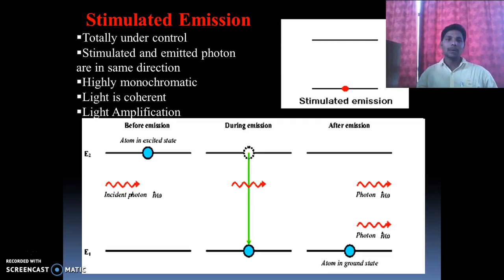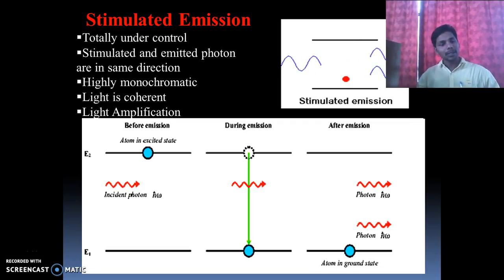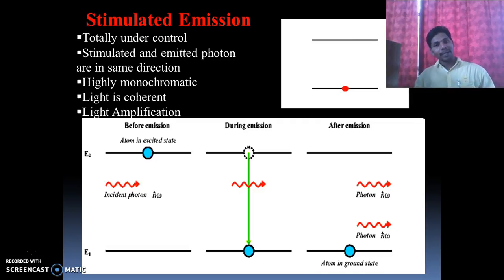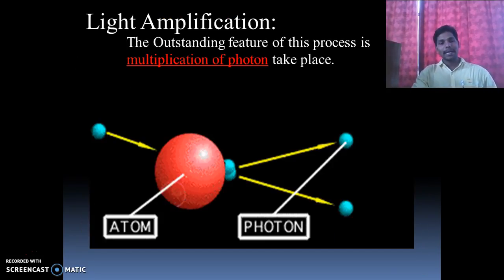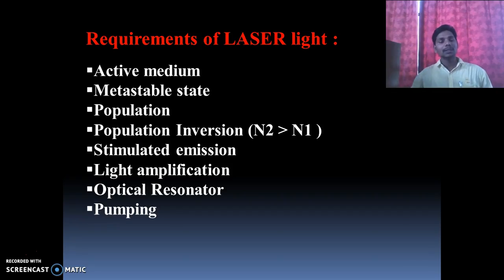To produce stimulated emission, we must have a metastable state. The metastable state is a state with a higher lifetime. The metastable state has a lifetime of the order of 10 to the power minus 3 seconds, while in spontaneous emission the lifetime is 10 to the power minus 8 seconds. Light amplification is a feature of stimulated emission: from two photons we get four, from four we get eight, from eight we get sixteen, and so on.